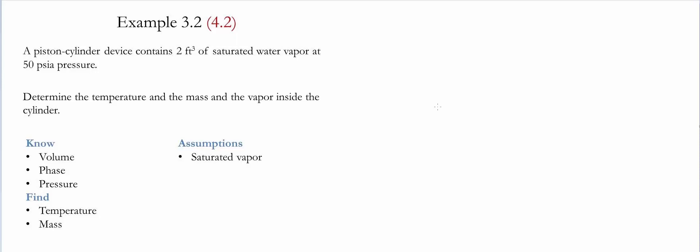Example 3.2 or 4.2 for the given textbooks. For details, please see the description below. In this example, there is a piston-cylinder device that contains 2 ft³ of saturated water vapor at a pressure of 50 psia. We need to find the temperature and the mass in these conditions.